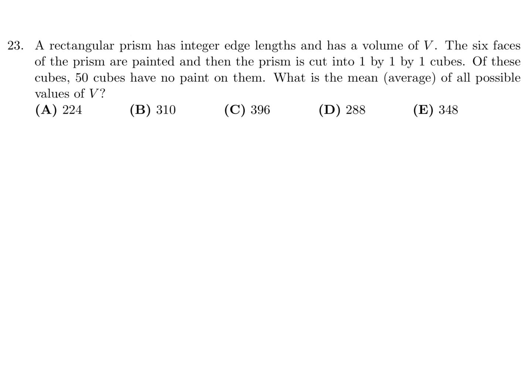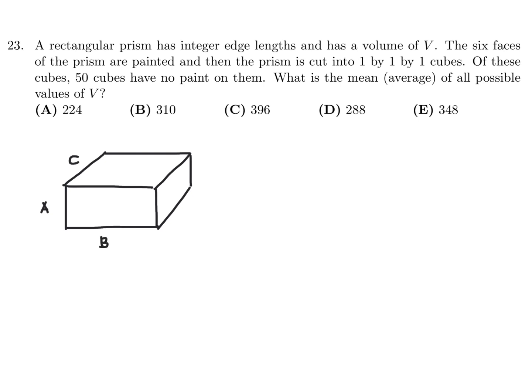A rectangular prism has integer edge lengths and has a volume of V. The six faces of the prism are painted and then the prism is cut into one by one by one cubes. Of these cubes, 50 cubes have no paint on them. What is the average of all possible values of V? Let's make a little cube here. We'll call the dimensions A, B, and C. In order to count the cubes that have no paint, it's basically the inner ones — you wouldn't count that top layer.